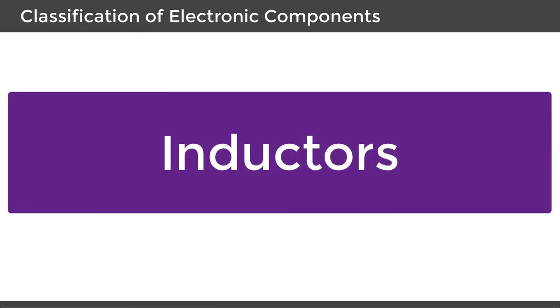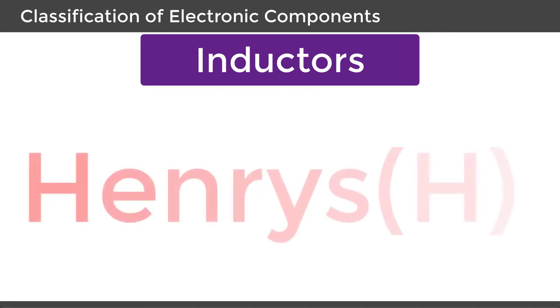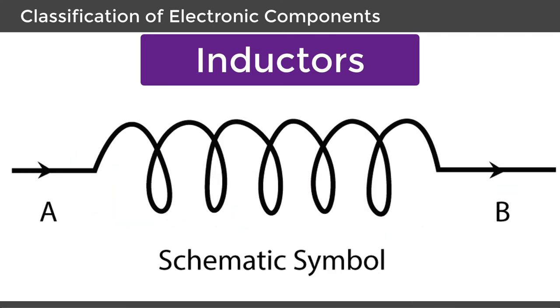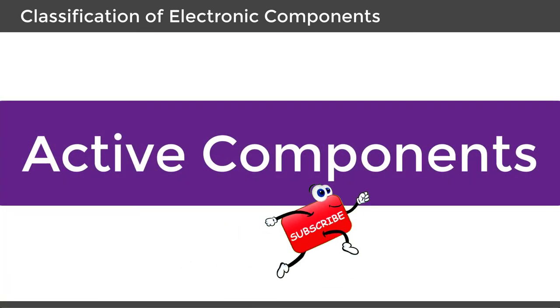Inductor. The electronic component which produces inductance is called an inductor. The inductance is measured in Henrys. All inductors, like resistors and capacitors, are listed as fixed and variable. Active components.